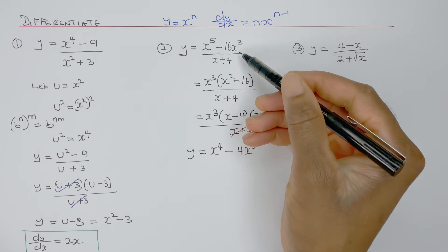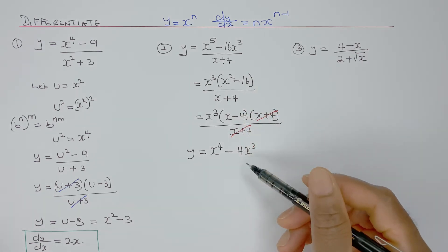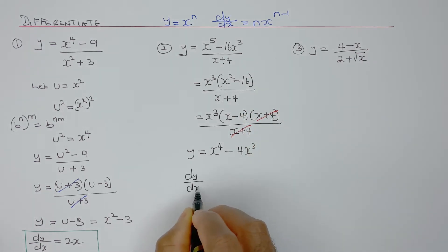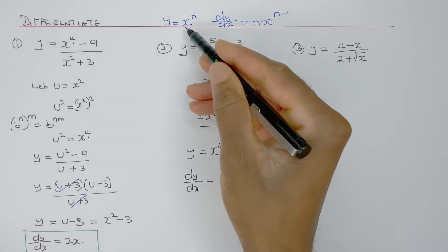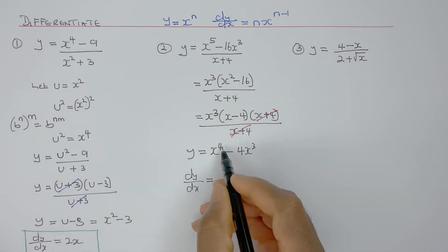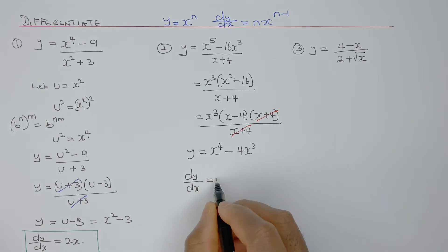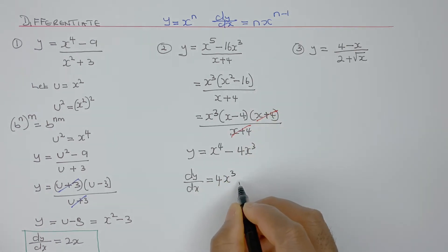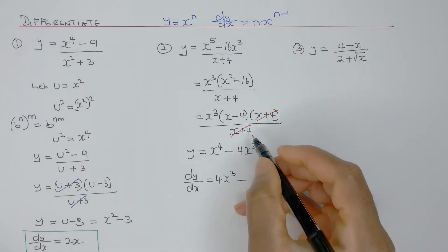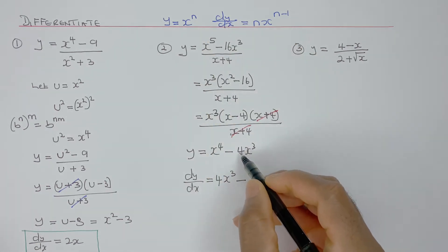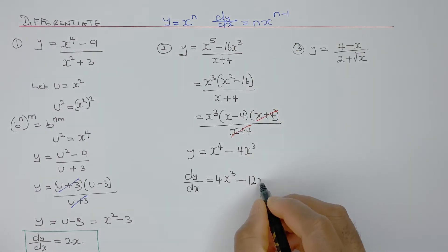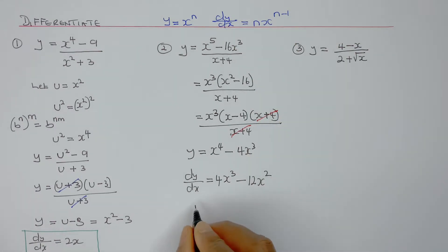That's been simplified from there to there. Now you can find dy/dx. Applying the rule with n equal to 4: 4 times 1 is 4, x to the power 4 minus 1 gives x cubed. Minus: n is 3, so 3 times 4 is 12, and 3 minus 1 gives x squared. So dy/dx equals 4x cubed minus 12x squared.